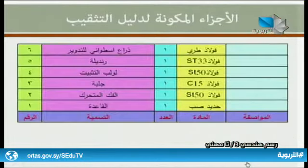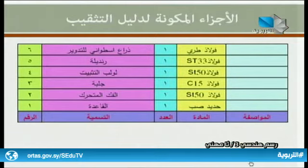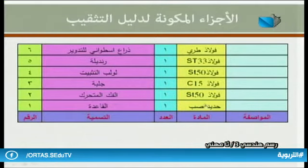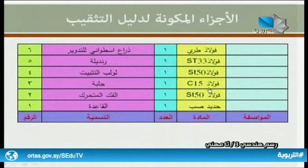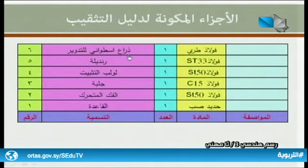الجدول الذي يظهر على الشاشة يبين جميع المعلومات المتعلقة بالأجزاء المكونة لدليل التثقيب: رقم 1 القاعدة من حديد صب، رقم 2 الفك المتحرك من الفولاذ ST50، رقم 3 الجلبة من الفولاذ، رقم 4 لولب التثبيت، رقم 5 الرنديلة، وأخيراً ذراع التدوير أسطواني الشكل.